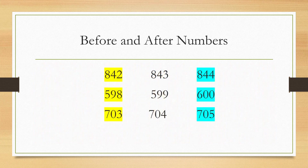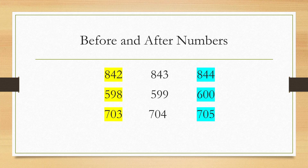Now let us solve some questions. Some numbers are given and we have to find out the after numbers and before numbers. The first number is 843. To find the after number, we count forward and the number we get is 844. To find the before number, we count backward and the number we get is 842.